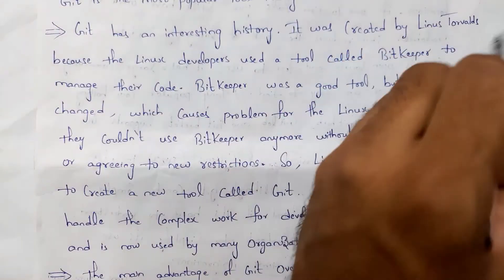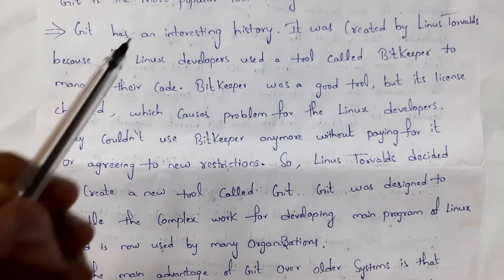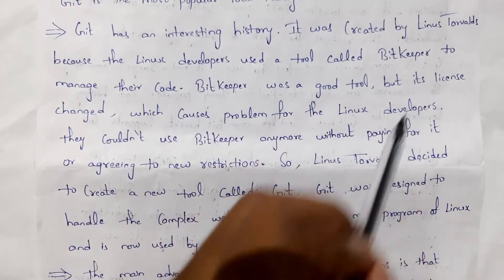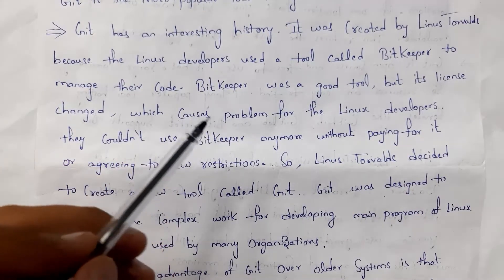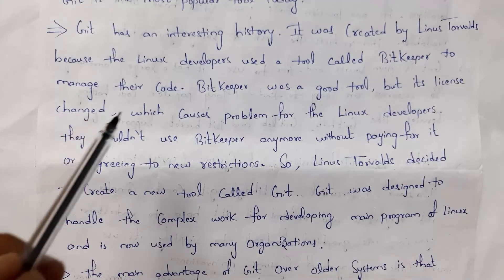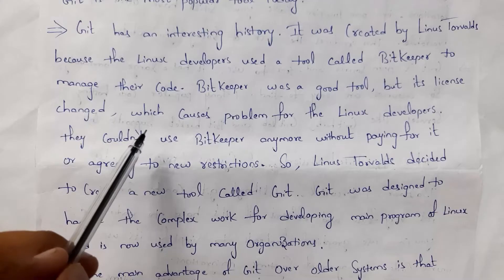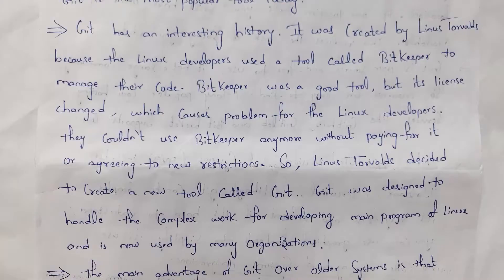Git has an interesting history. It was created by Linus Torvalds. In the old days, Linux developers used a tool called BitKeeper to manage their code. BitKeeper was a good tool, but when its license changed, they could no longer use its complete features without paying money. So instead of paying for BitKeeper, Linus Torvalds decided to create a new tool called Git, mainly to manage code written by developers.